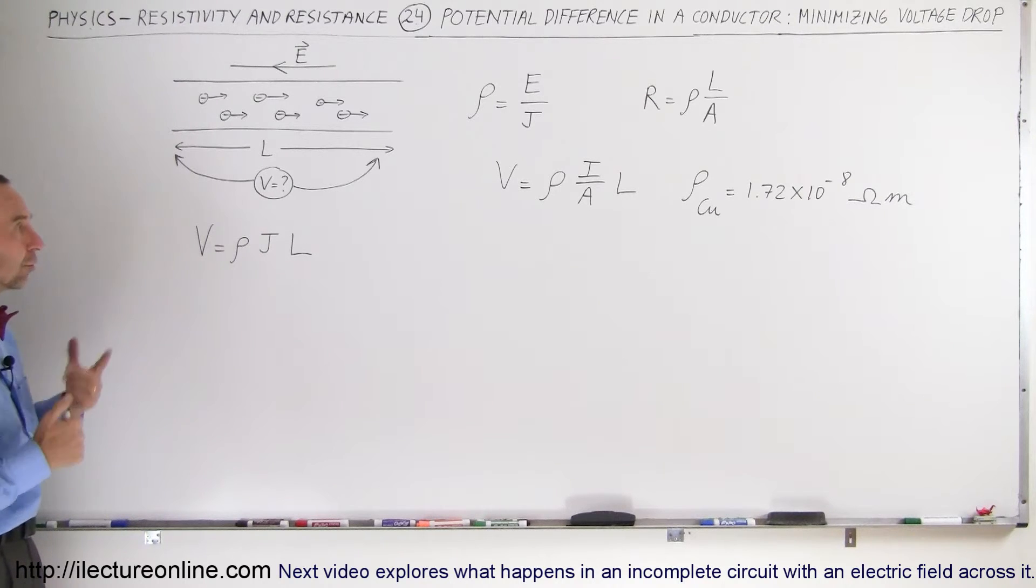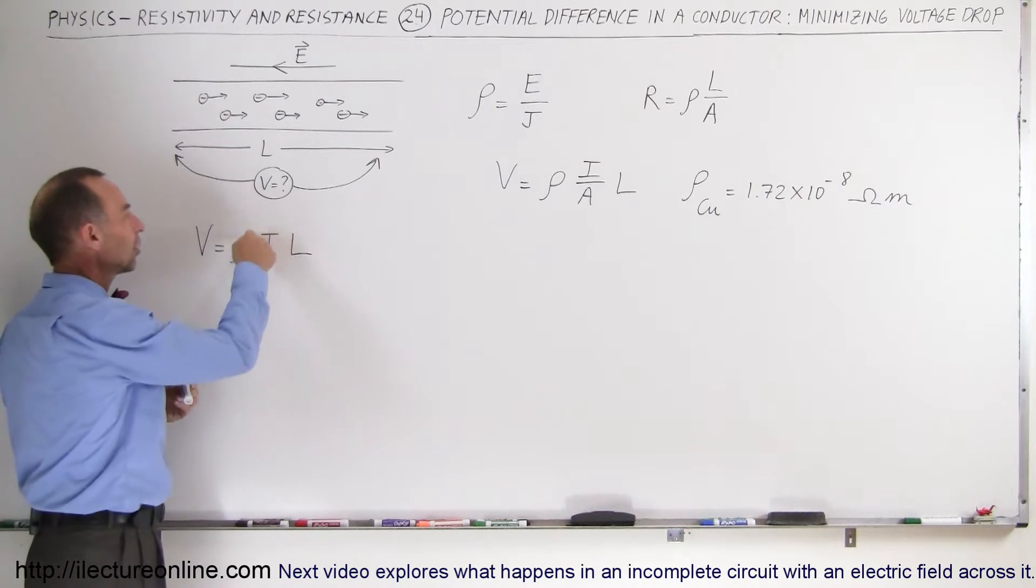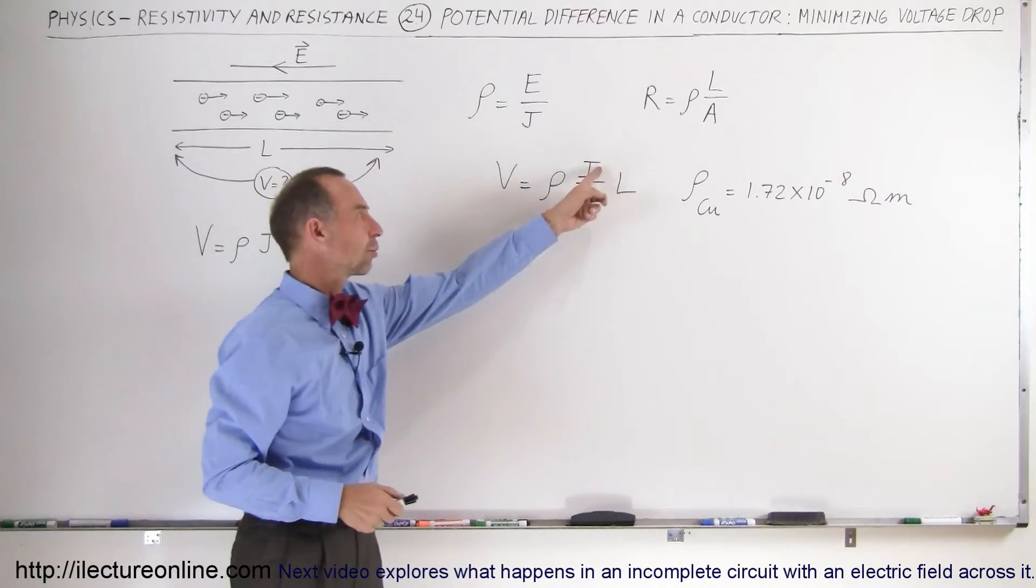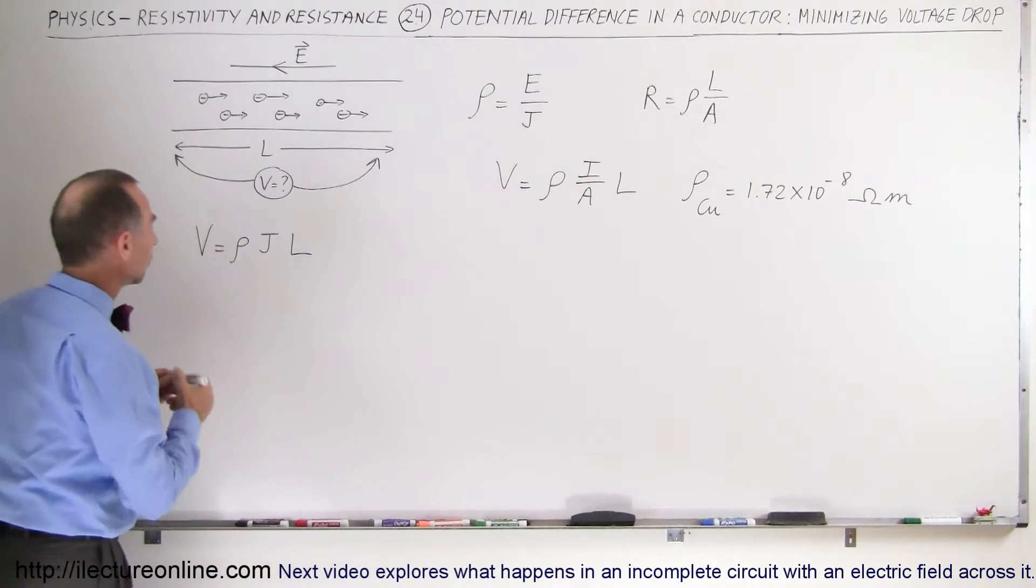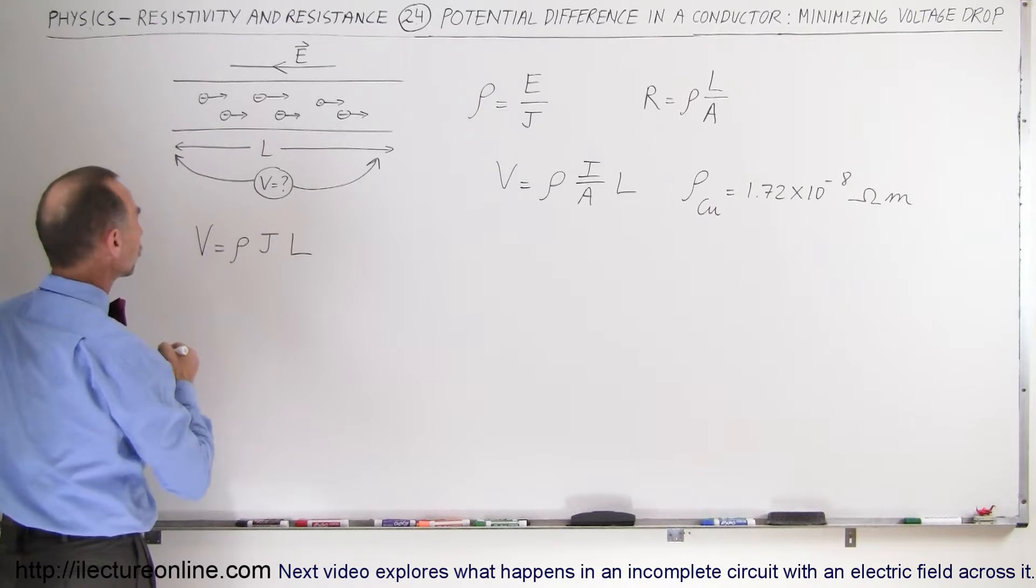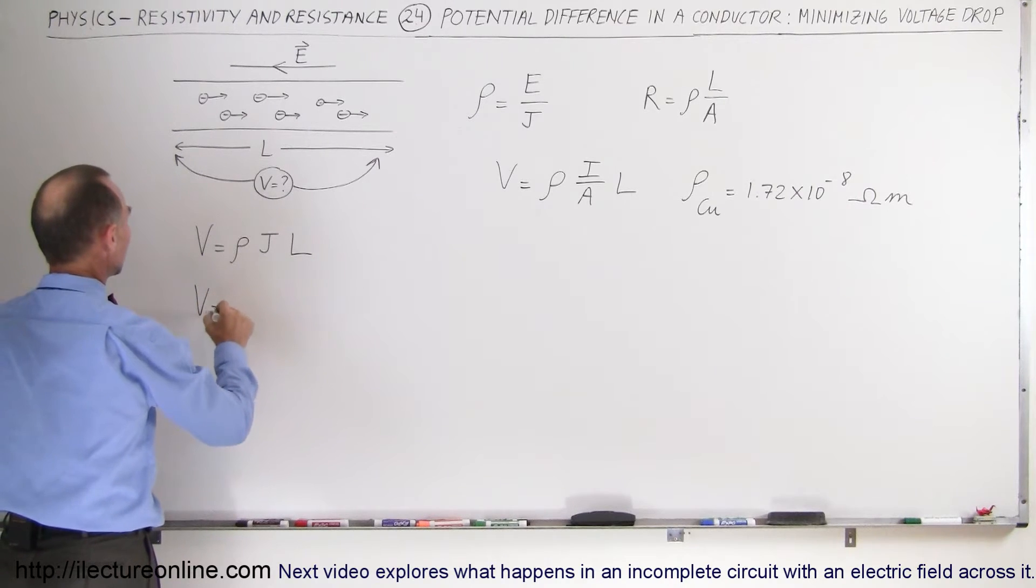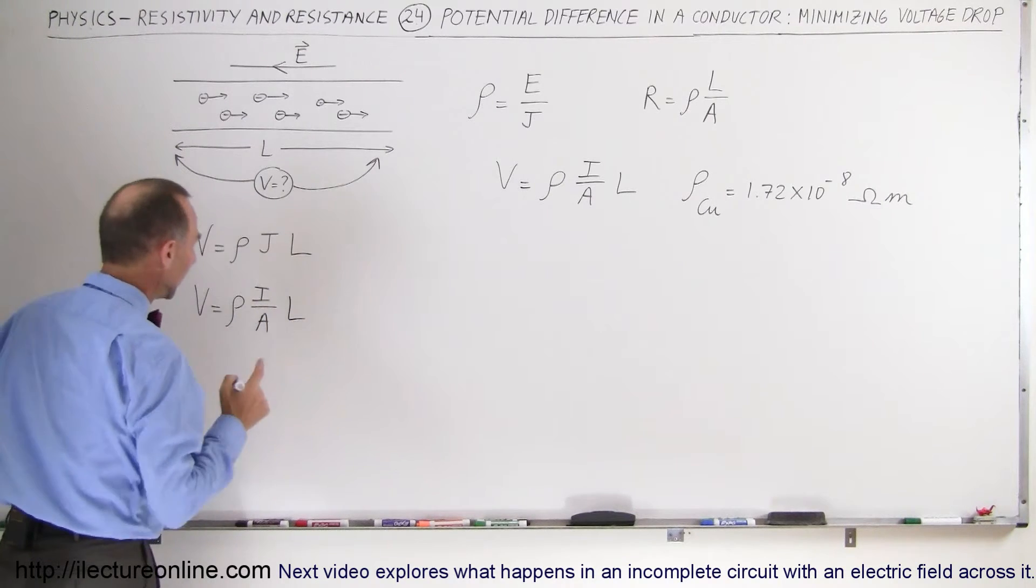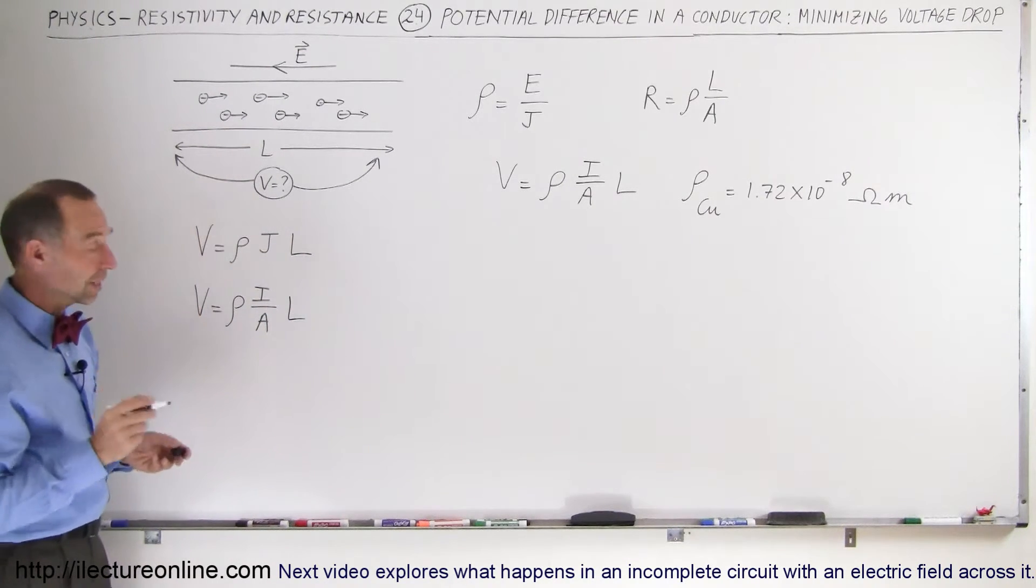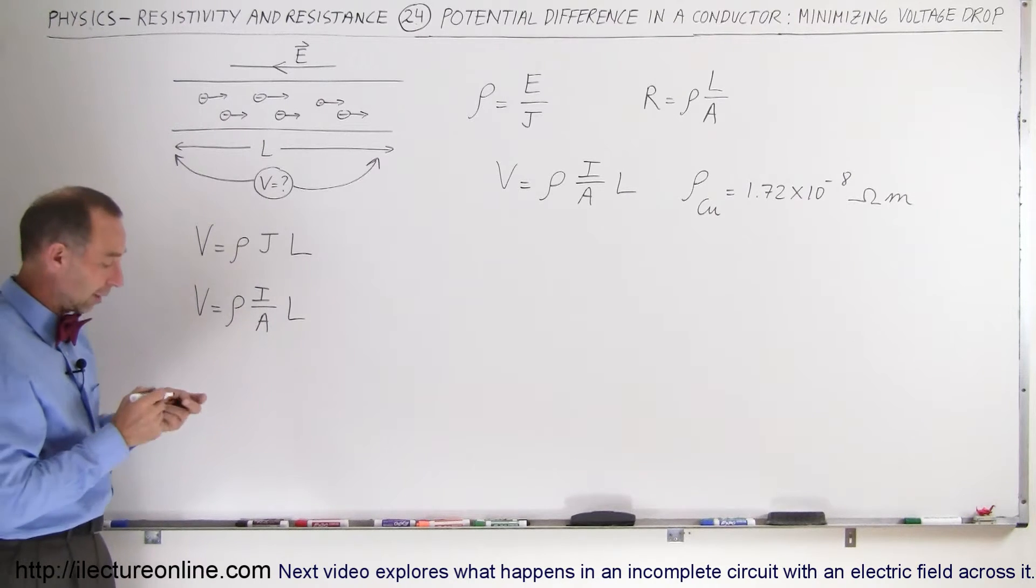So the only option we have is the current density, which can be expressed in terms of current per unit area. The current density is the portion that we can control. Here we have the voltage, which is equal to the resistivity times the ratio of the current divided by the cross-sectional area times L.